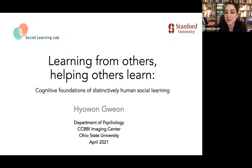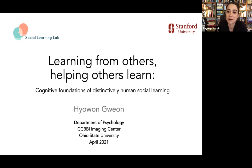She's also director of grad studies of the Symbolic Systems Program and director of the Social Learning Lab. She went on to receive quite a few prestigious awards and grants, and she continues to publish at a remarkable rate. Hio is thoughtful and methodical, and her research is refreshingly interdisciplinary. It combines computational cognitive neuroscience with social psychology and developmental psychology. She's also a wonderful human, and I'm lucky to know her. Please join me in welcoming Hio.